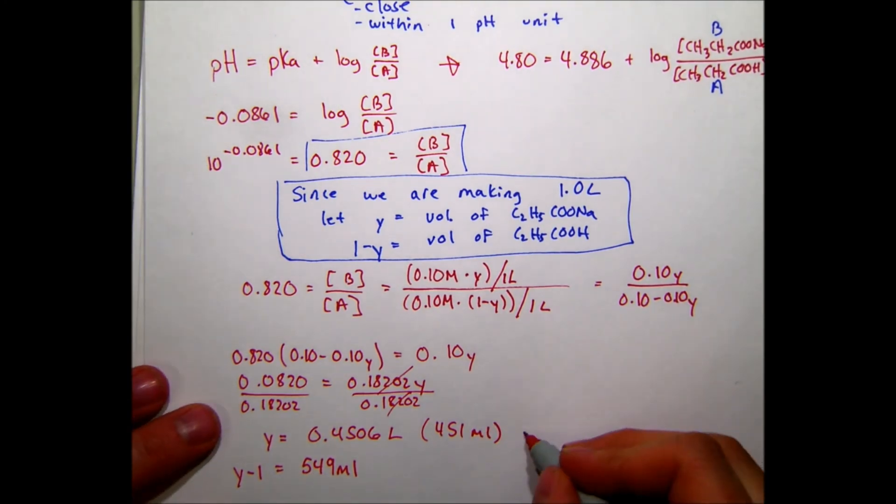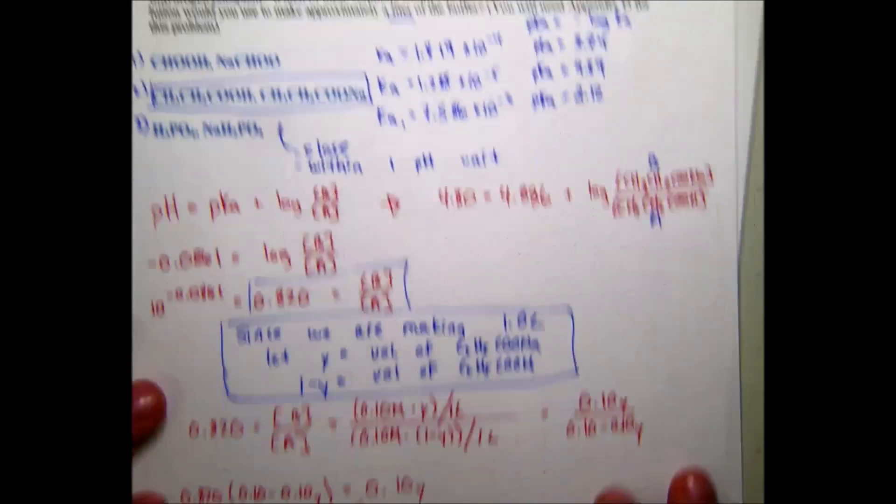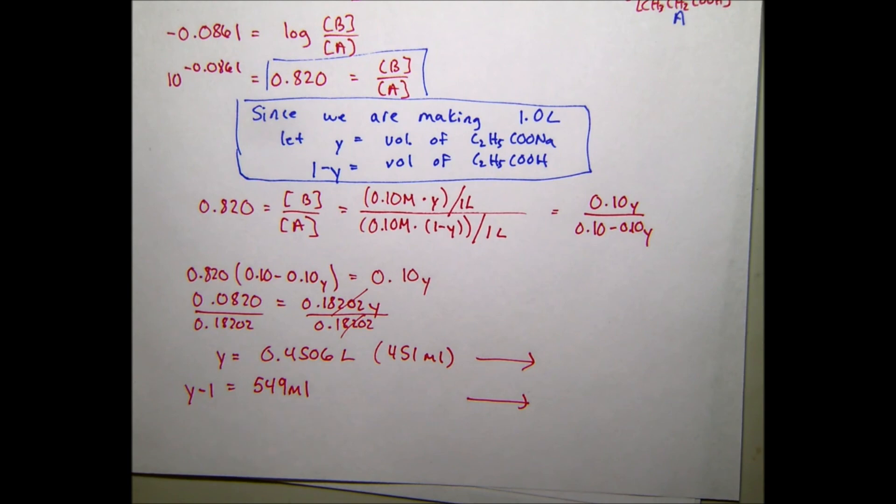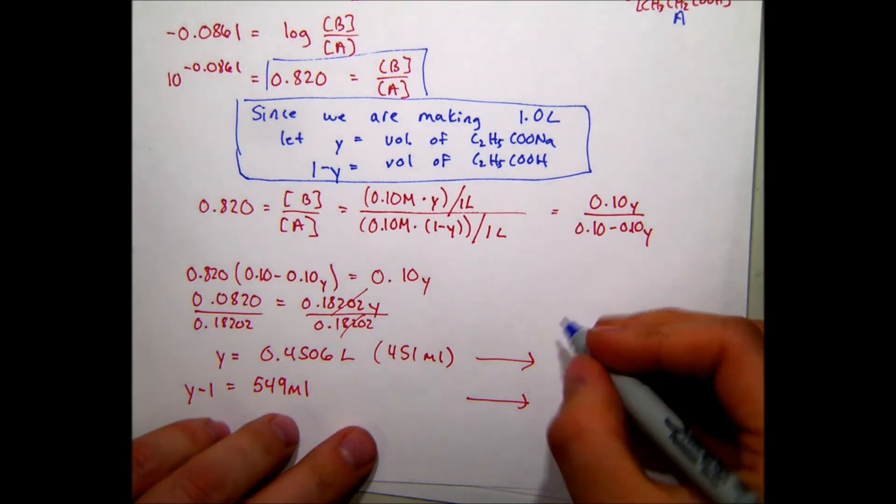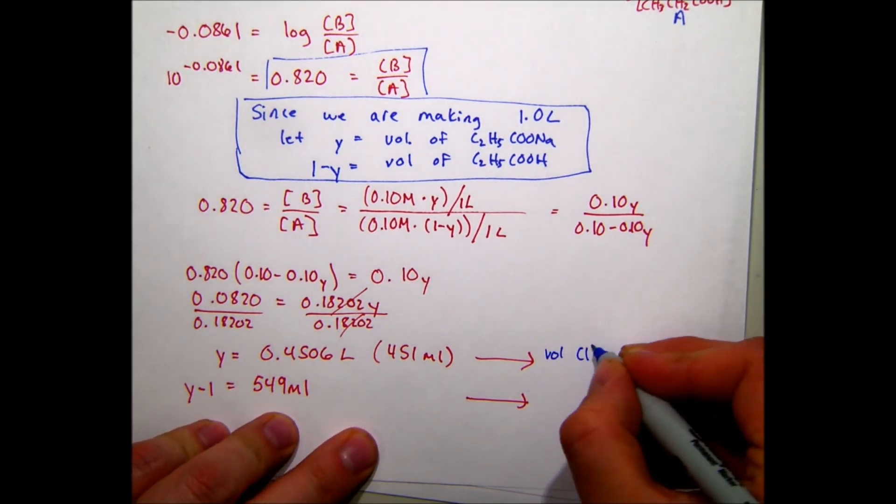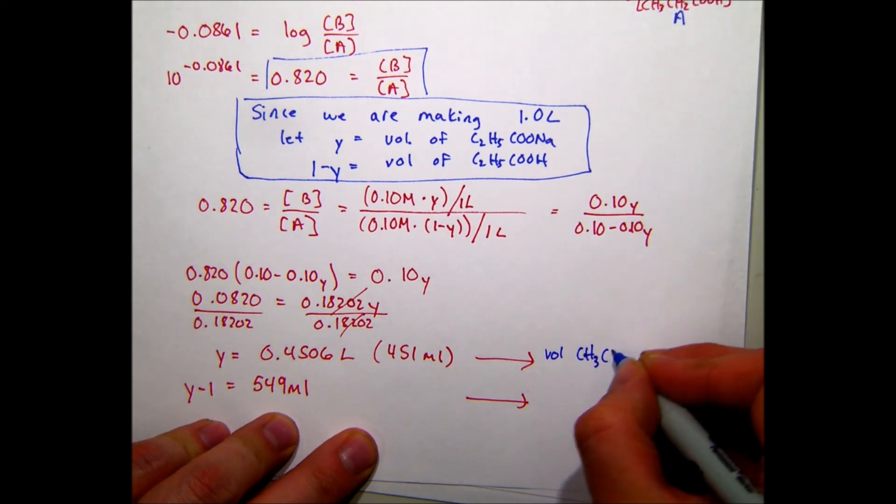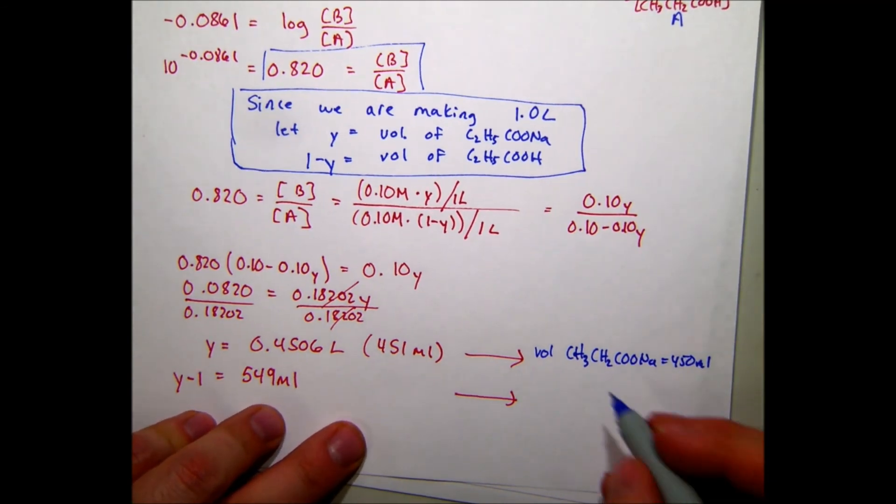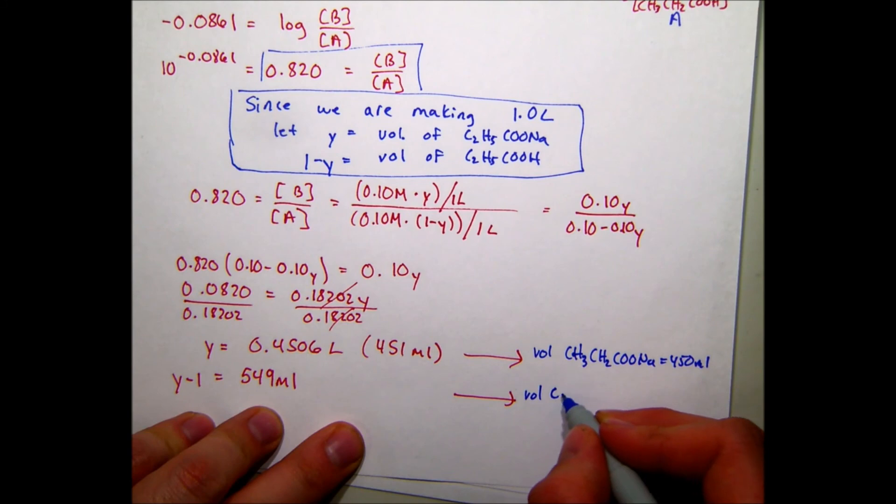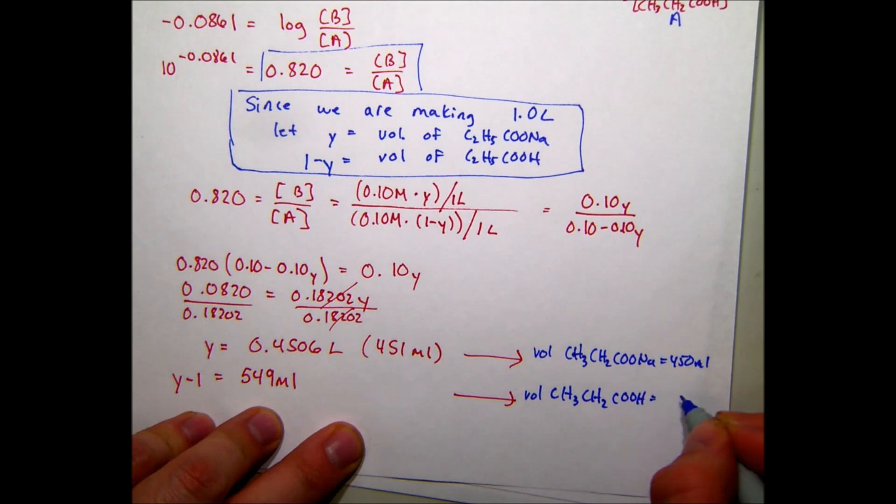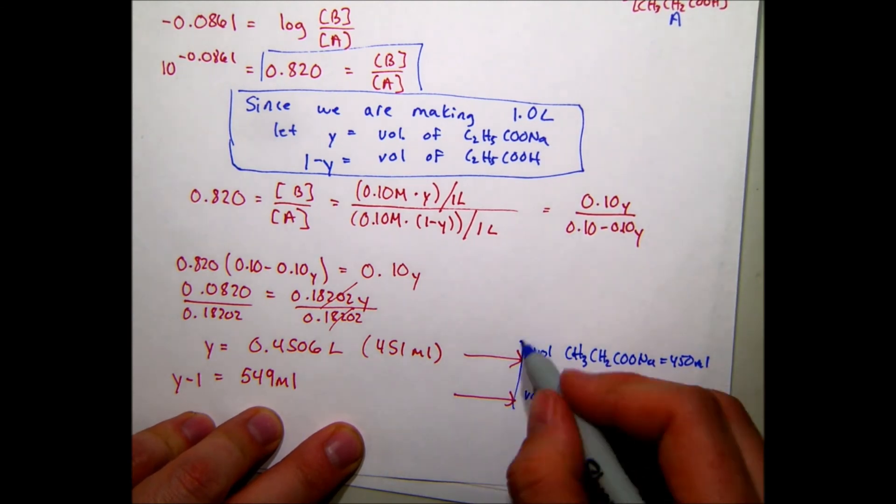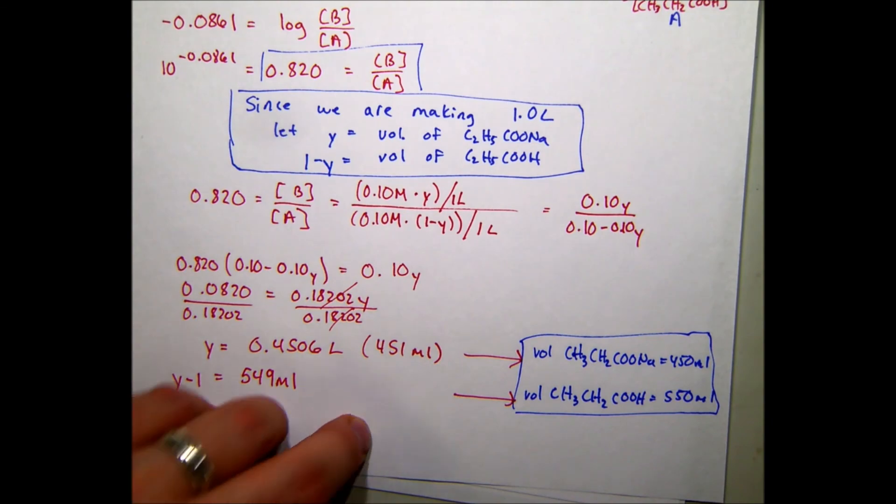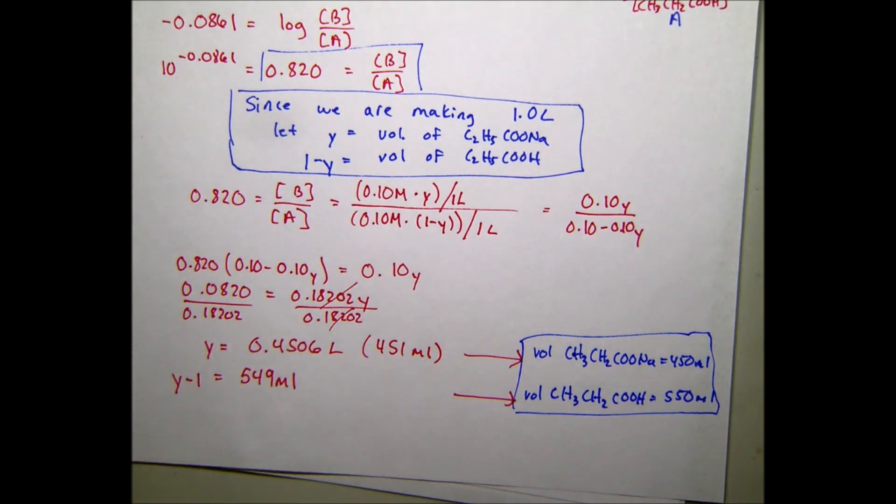So 1 minus y must equal 549 milliliters. Because the sum of those two have to equal one liter. With significant figures, I only have two significant figures in my molarity, so I can't really report that to three. So the volume of CH3CH2COONa is 450 mL, and the volume of CH3CH2COOH is 550 mL. And that is how we solve this problem.